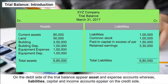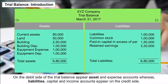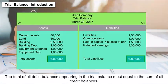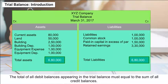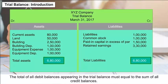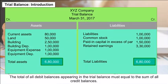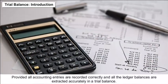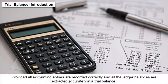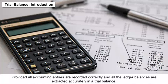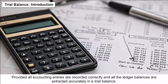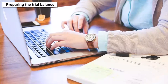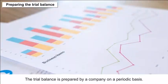On the debit side of the trial balance appear asset and expense accounts, whereas liabilities, capital and income accounts appear on the credit side. The total of all debit balances must be equal to the sum of all credit balances, provided all accounting entries are recorded correctly and all the ledger balances are extracted accurately.